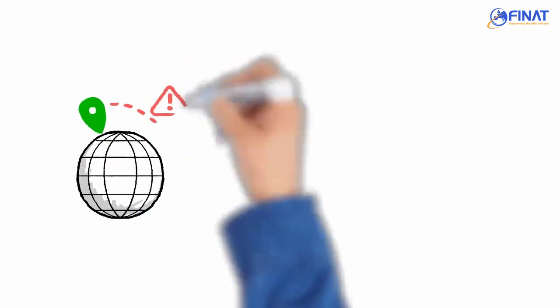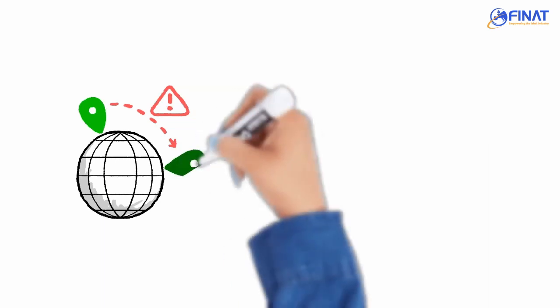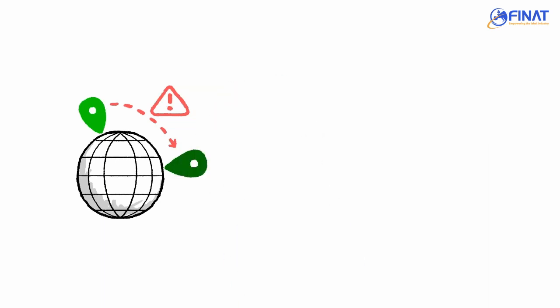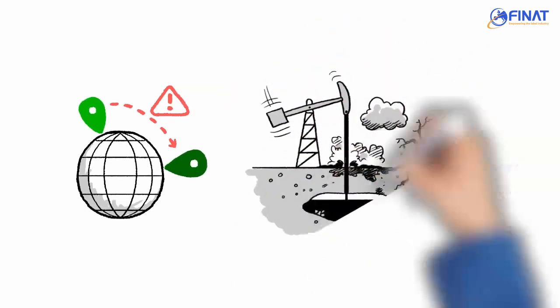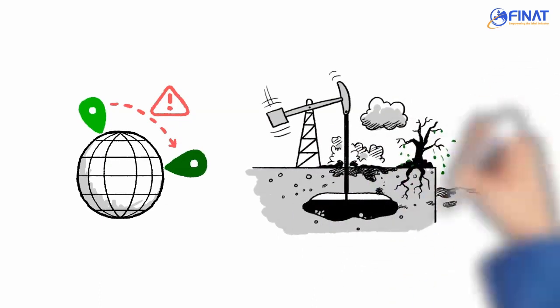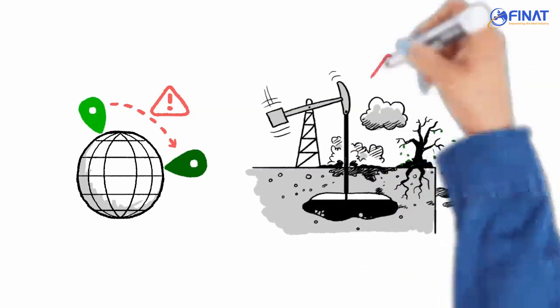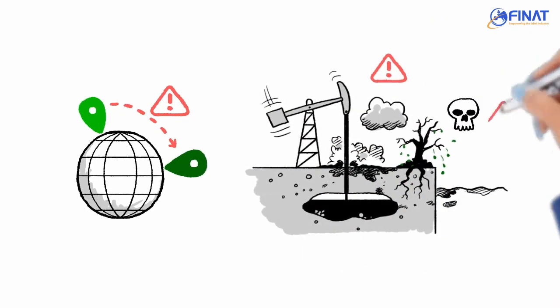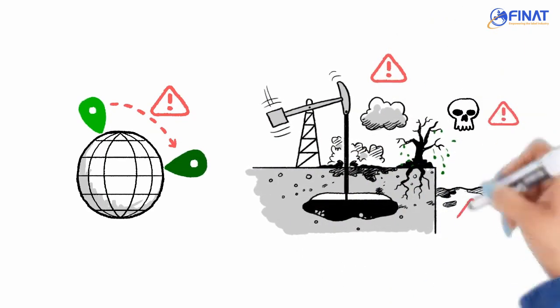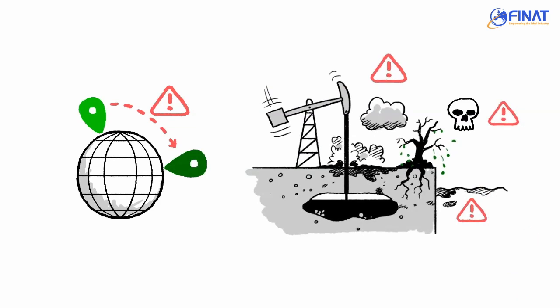Geographical origin for a raw material is often a significant variable — not just in terms of the energy needed to transport, but also how the raw material is produced. Geographical origin has an especially important impact on Scope 3 figures.